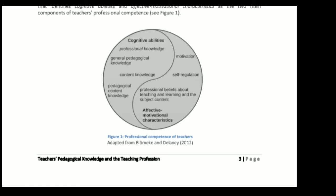While teacher knowledge is certainly a component of teacher professionalism, professional competence involves more than just knowledge — skill, attitudes, and motivational variables also contribute to the mastery of teaching and learning. Baumert and colleagues (2012) proposed a model that identifies cognitive abilities and affective-motivational characteristics as the two main components of teachers' professional competence, including professional knowledge, general pedagogical knowledge, content knowledge, pedagogical content knowledge, motivation, self-regulation, professional beliefs, and subject content.